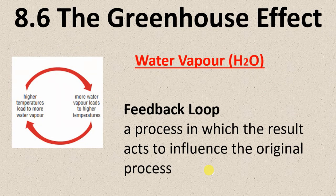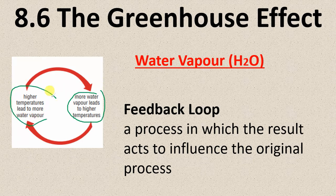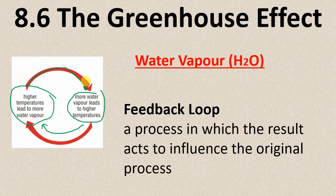Water vapor, on the other hand, involves a feedback loop — a process in which the result acts to influence the original process. There's lots of water on the planet, so more water leads to higher temperatures, and higher temperatures lead to more water vapor. The more water vapor in the atmosphere, the more heat it traps — that's what's going on with water.